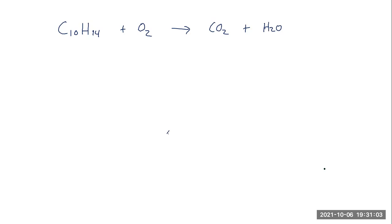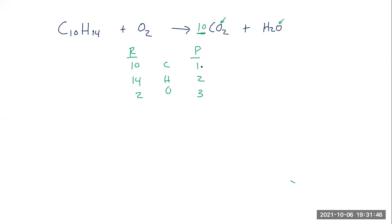Let's take a look at another example. Again, I'll make a table. We have carbon, hydrogen, and oxygen. Left-hand side: ten carbons, right-hand side: one. Left-hand side: fourteen hydrogens, right-hand side: two. Left-hand side: two oxygens, right-hand side: two plus one makes three. Much like the previous one, carbon would be the simplest thing to fix — we'll put a ten in front of CO2. That gives me ten carbons, still two hydrogens. Distributing the ten gives ten times two is twenty oxygens in CO2, plus one more from H2O, is twenty-one total on the right.